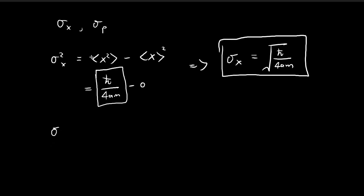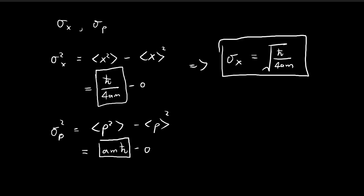Now we repeat the same procedure for momentum. We find the variance of momentum, which is equal to the expected value of momentum squared minus the expected value of momentum, and then squared. We found that the expected value of p squared is equal to amℏ, and the expected value of p is just equal to 0. So the standard deviation of momentum is equal to the square root of amℏ.